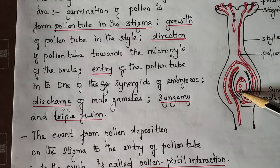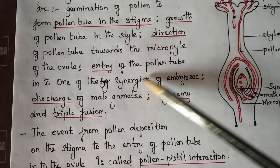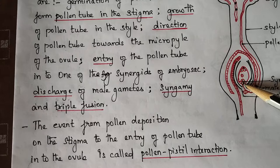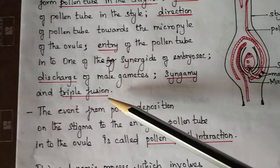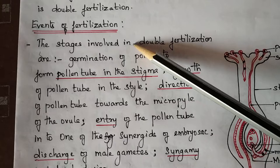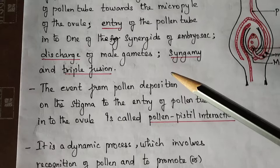The pollen tube moves towards the micropyle region. The pollen tube enters one of the synergids. The embryo sac and discharge of male gametes is followed by syngamy and triple fusion. These are some of the key events of double fertilization.